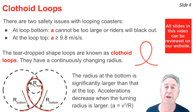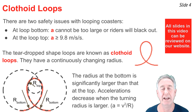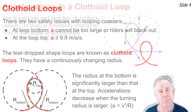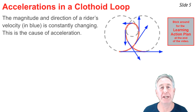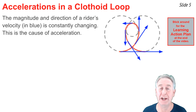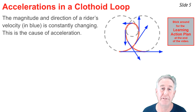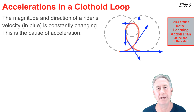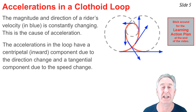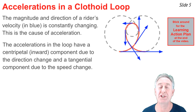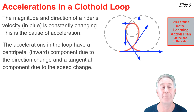So at the bottom of the loop, if the radius is large, the accelerations are small and riders don't black out. And at the top, you want the radius to be rather small so that the accelerations are greater than 9.8 and riders don't fall out of the cars when upside down. While traveling through a clothoid loop, the magnitude and direction of a rider's velocity is continuously changing — this is the cause of acceleration. The diagram above shows blue arrows representing the velocity vectors at various locations along the track. The velocity is always tangent to the curve, and it's larger at the bottom than at the top, best explained by energy principles. A rider traveling through a clothoid loop experiences a centripetal component of acceleration due to changes in direction, and a tangential component of acceleration due to changes in speed.